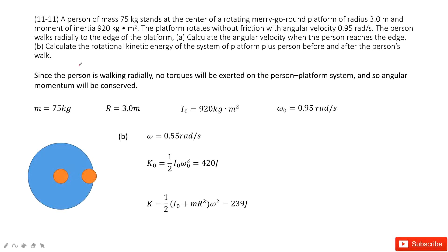And the second problem asks us to find the rotational kinetic energy at the initial and final. So initial is easy. It's just one-half I omega squared.